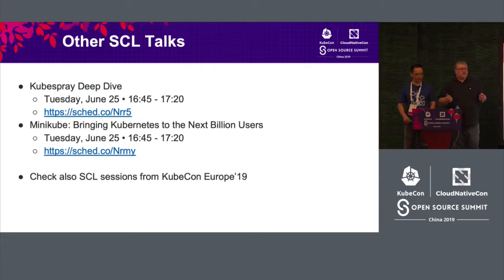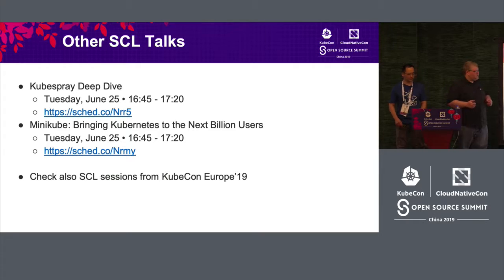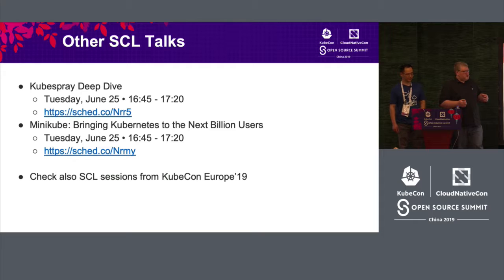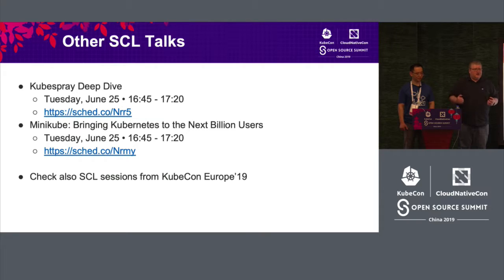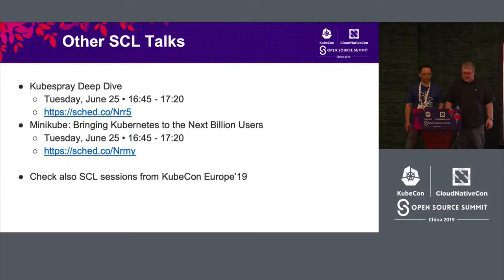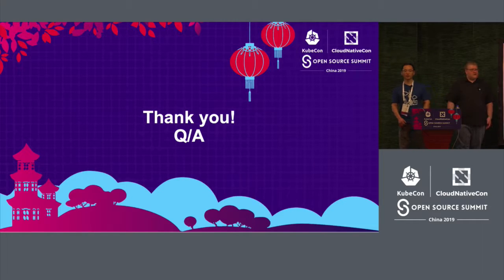We don't have deep dives on many of our components today, but at least two separate sessions for components belonging to SIG Cluster Lifecycle will be held today — unfortunately both are in exactly the same time slot. KubeSpray is an Ansible-based set of playbooks for end-to-end cluster deployment, and MiniKube is for local cluster and virtual machine environments on your laptop. Check the recordings from KubeCon Europe — there we had more SIG sessions with deep dives, more interesting information, and more technical details. Thank you all, and we're looking forward to your contributions to our SIG.